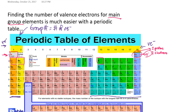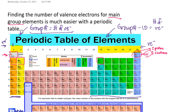For groups 13 through 18, the rule is slightly different: take the group number and subtract 10 to get the number of valence electrons. So group 1 has 1 valence electron, group 2 has 2 valence electrons. For group 13: 13 minus 10 equals 3 valence electrons.